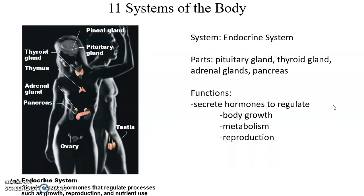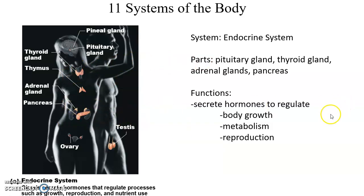The endocrine system is a collection of structures that all produce hormones, including the pituitary gland beneath the brain, the thyroid gland in the throat, the adrenal glands above the kidneys, and the pancreas. These hormones regulate body functions including growth, metabolism, reproduction, and a whole host of other things.